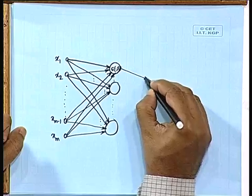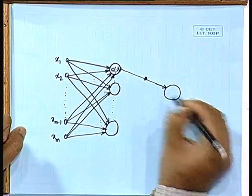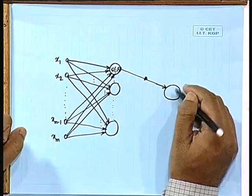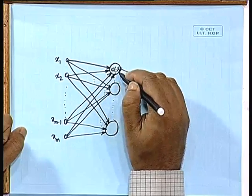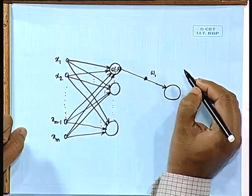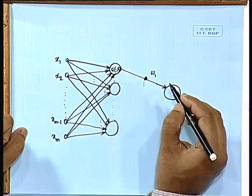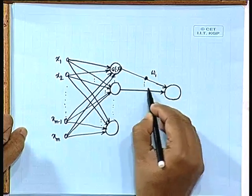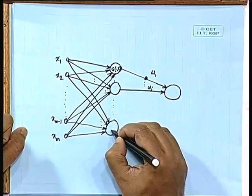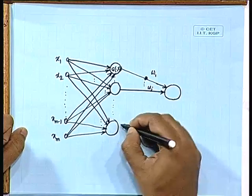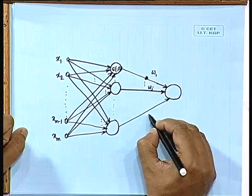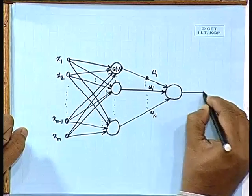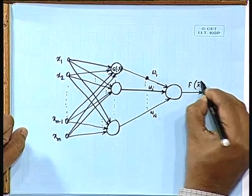These will be the responses of the Green's function computational units. We simply weight each one with the individual weights: the first is multiplied by w_1, the second by w_2, the j-th by w_j, and the last — g centered around x_n — by w_n. All these responses are added up in a linear computational unit, which then gives us f(x), where x is the vector of inputs we are feeding.